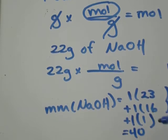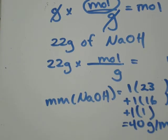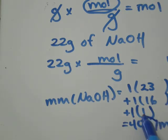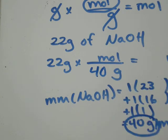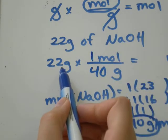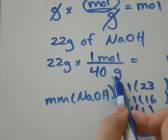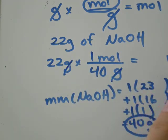So when I go back to my equation up here, I need to keep the 40 attached to the grams. So it'll be 22 grams times 1 mole over 40 grams. The grams will cancel out, and I'll get my answer in terms of mole.